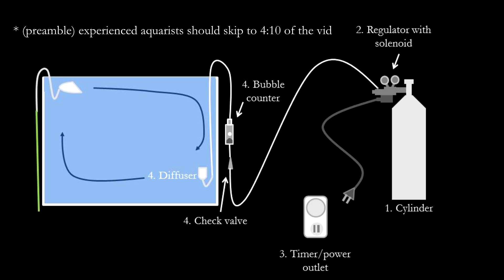This is a diagram of a typical CO2 system. It looks more confusing than it actually is. Many shops sell the entire system as a complete package, so you don't need to buy the individual items separately. Typically you need a cylinder to contain the CO2 gas. This is connected to a regulator that steps down the pressure and allows a small amount of CO2 to be channelled out at once. The regulator connects to a check valve, which prevents water from the tank from sipping back to the regulator and damaging it. After the check valve is the bubble counter, a device that allows you to see the rate of injection of CO2 into the tank. At the final stage is either a diffuser or in some cases a reactor, and this is where the CO2 mixes with your tank water.